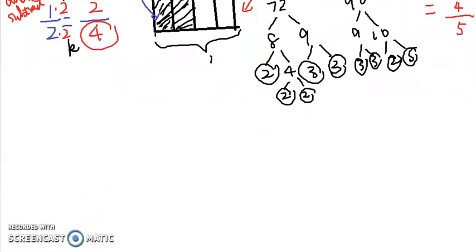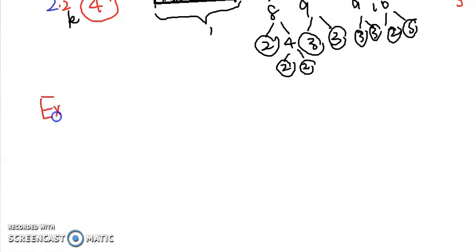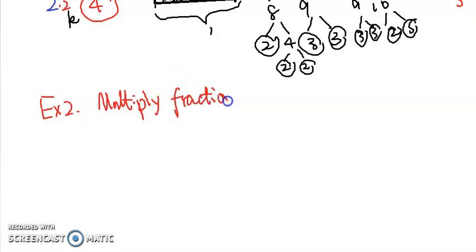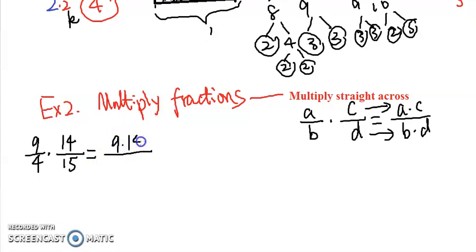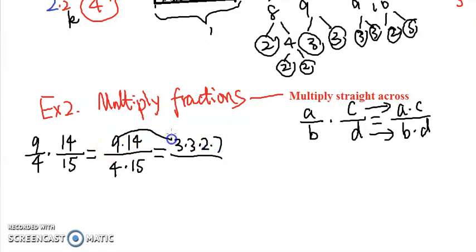Next let's look at how to multiply and divide fractions. For multiplication, the rule is multiply straight across: multiply the top numbers A and C, and the bottom numbers B and D. For example, multiplying 9 over 4 times 14 over 15: we multiply the top numbers 9 and 14, and the bottom numbers 4 and 15. Then we reduce the answer by breaking each number down — 9 is 3 times 3, 14 is 2 times 7, 4 is 2 times 2, and 15 is 3 times 5.